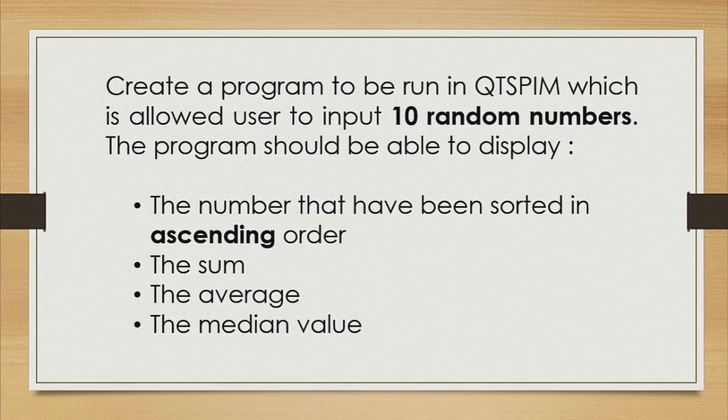Here is an example equation which is to create a program to be run in QtSpim which allows a user to input 10 random numbers. The program should be able to display the numbers that have been sorted in ascending order, the sum, the average, and the median value.